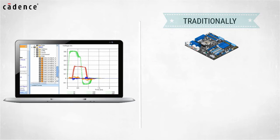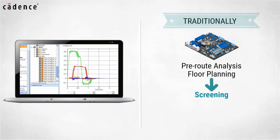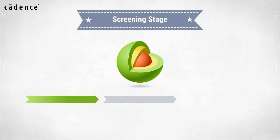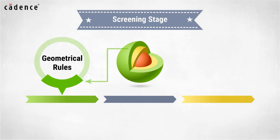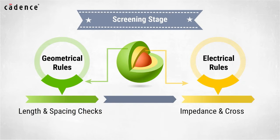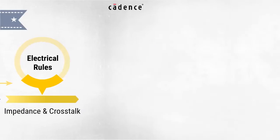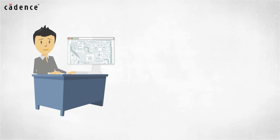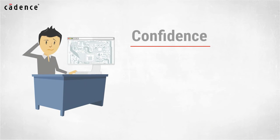Traditionally, printed circuit boards go through a pre-route analysis and floor planning stage before the design is routed, and then both a screening and a post-route detailed analysis. The screening stage is meant to catch glaring problems that used to be limited to geometrical rules such as length and spacing checks. Eventually, electrical rules such as impedance and crosstalk were added to this screening portion of the PCB design flow.